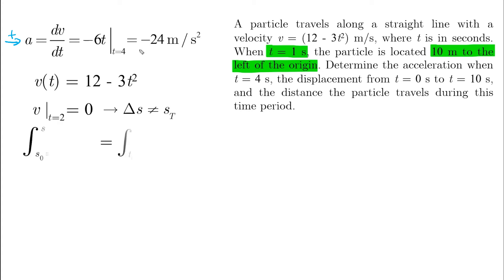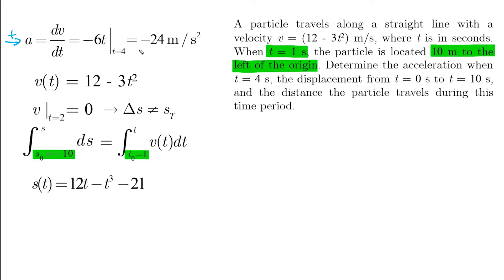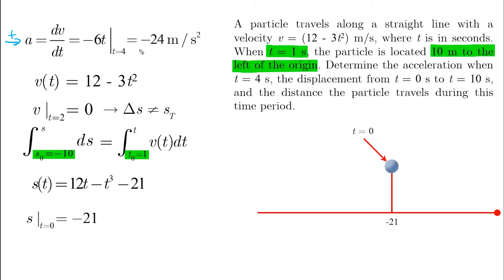Now we're ready to integrate V(T) to find S(T). Remember our initial condition: S naught equals minus 10 at T equals 1. The result is a cubic function. The displacement from T equals 0 to T equals 10 is found by calculating S at both times. At T equals 0, S equals minus 21. At T equals 10, S equals minus 901.